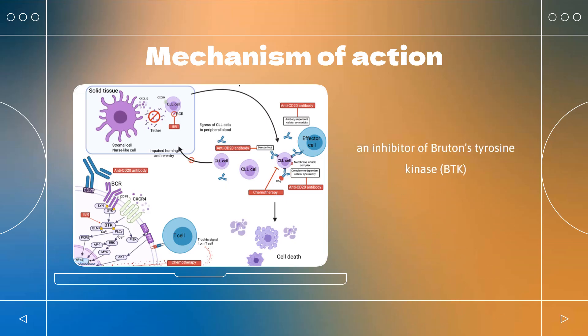Mechanism of Action: Ibrutinib is an inhibitor of Bruton's tyrosine kinase (BTK). It forms a covalent bond with a cysteine residue in the active site of BTK, CYS-481, leading to its inhibition. The inhibition of BTK plays a role in B-cell receptor signaling, and thus the presence of ibrutinib prevents the phosphorylation of downstream substrates, such as PLC-gamma.